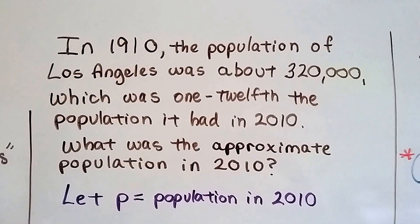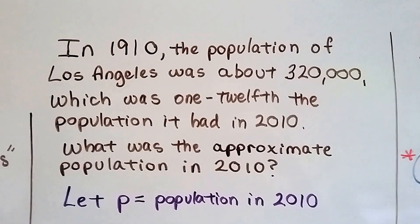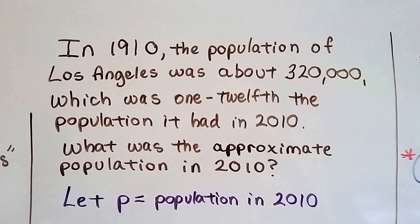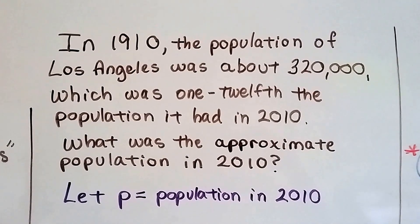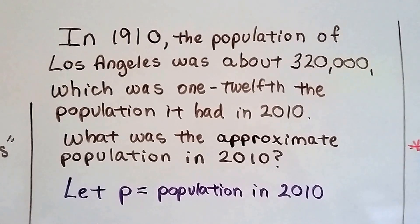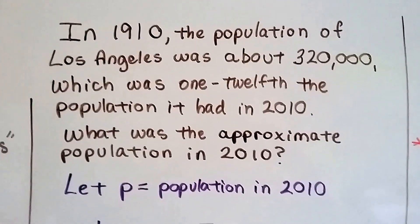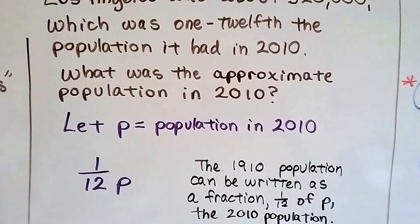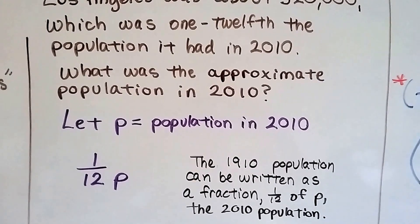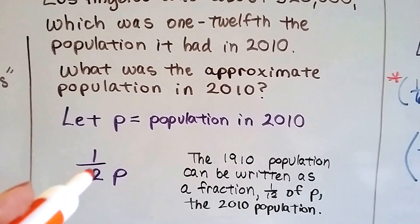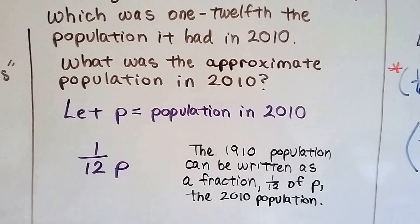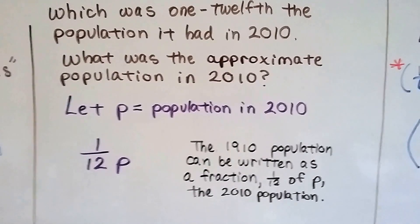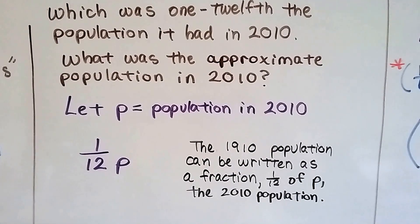Well, in 1910, it told us it was 320,000, and that's one-twelfth of what we need to find. So we're going to let P equal population in 2010, and because it was one-twelfth, we're going to do one-twelfth P. We're going to multiply the one-twelfth times the P to find our answer. The 1910 population can be written as a fraction, one-twelfth of P.